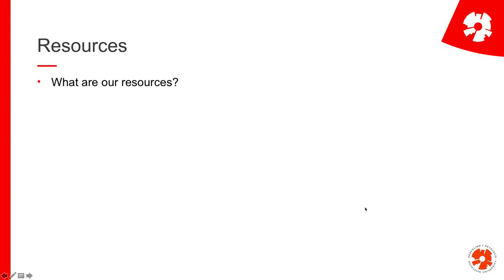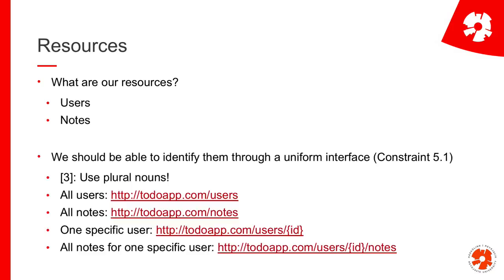So the first thing is: what are our resources? We want to have resources in REST or in HTTP, so what do we do in our case? We build a to-do app, so obviously we have to have the to-do notes, and we want to have multiple users — so that's another resource.